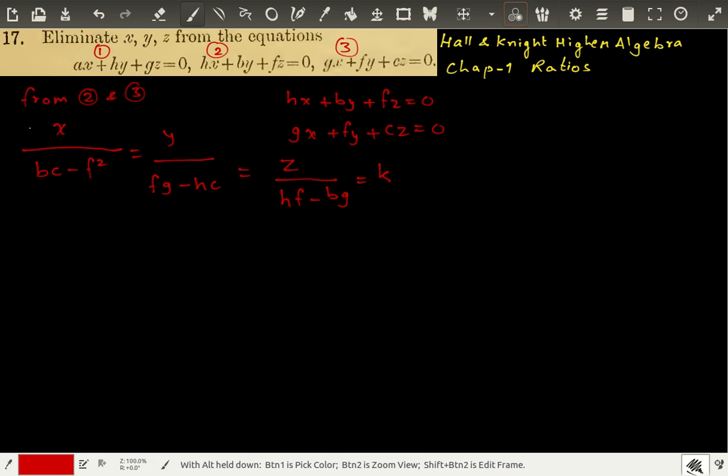Now, from this relationship, we find x and substitute in the first equation. So, first equation is a times x. So, a times x can be written as bc minus f squared times k.